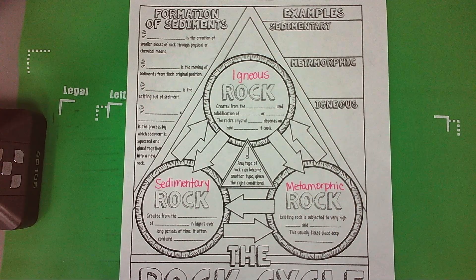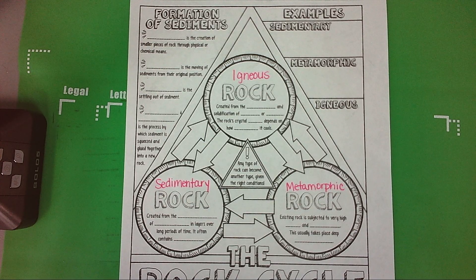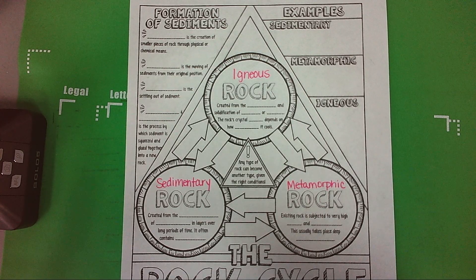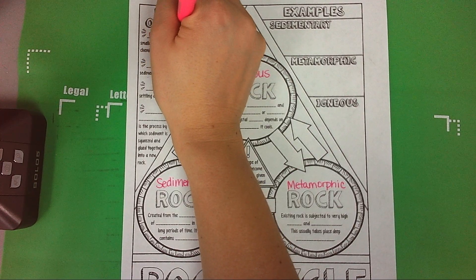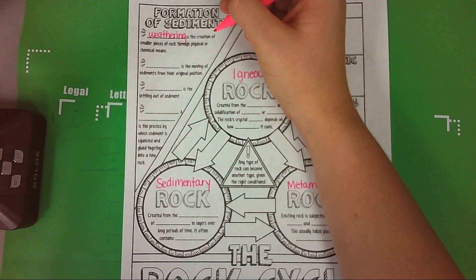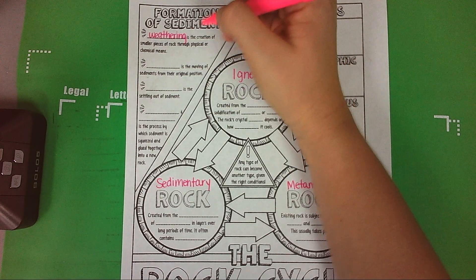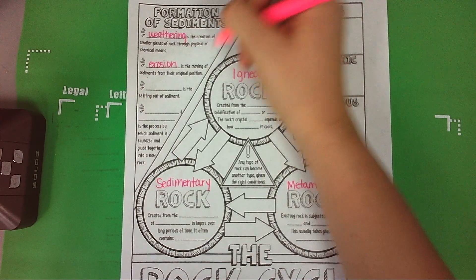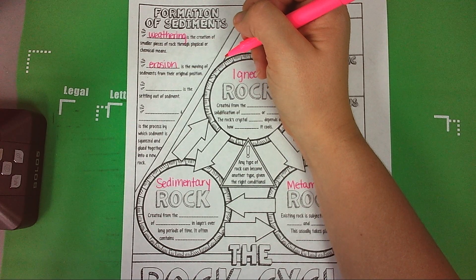Let's first talk about the formation of sediments. Remember weathering and erosion? That has a lot to do with sedimentary rock. Weathering is the creation of smaller pieces of rock through physical or chemical means. Remember there's physical and chemical weathering, so weathering actually is a part of the rock cycle. Then erosion is the moving of sediments from their original position.